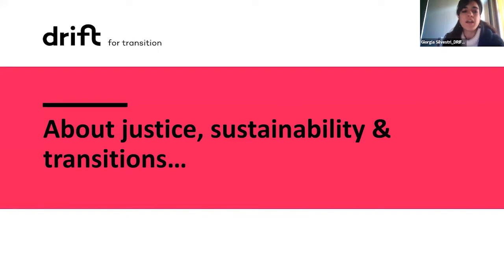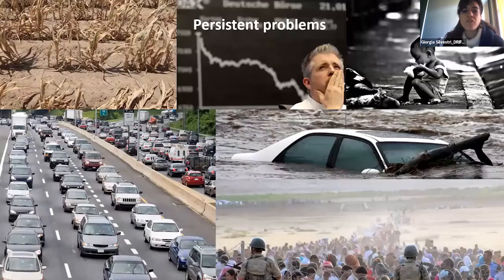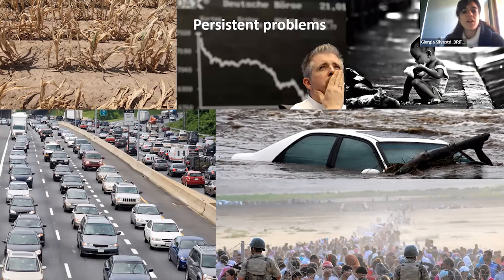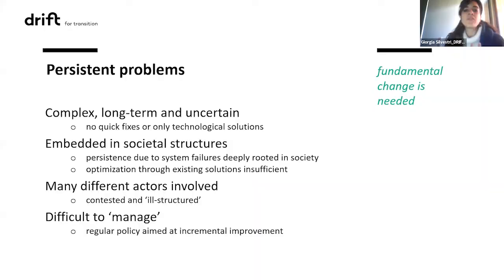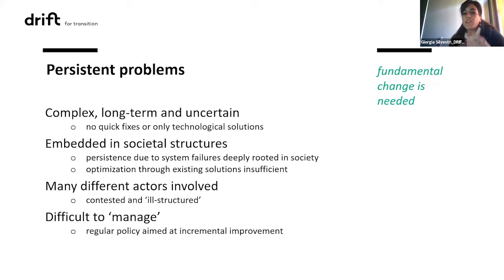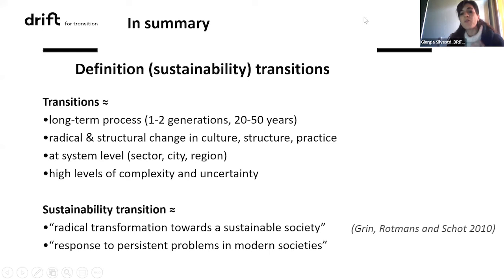The starting point of sustainability transition is that we really live in very persistent problems, and we're seeing this more than ever right now. These persistent problems are complex, long-term, very uncertain, and deeply embedded in societal structures. It's impossible to manage them through existing or even new solutions alone, and there are many different actors involved in the system, so it's really important to find new, systemic ways to address them.